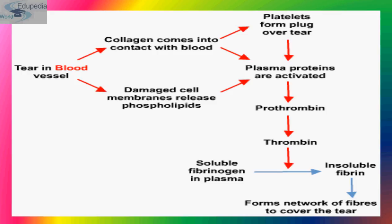Prothrombin is an initial stage of thrombin. Thrombin helps in the conversion of soluble fibrinogen present in the plasma into insoluble fibrin. This insoluble fibrin forms a network of fibers to cover the tear. This is how blood coagulation takes place.